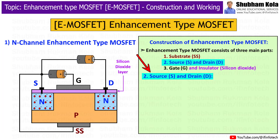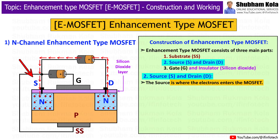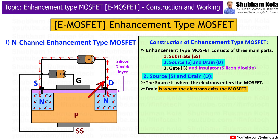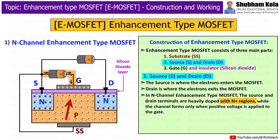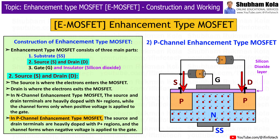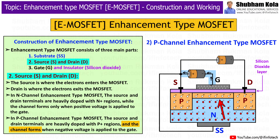Next is the source and drain. The source is where electrons enter the MOSFET, and the drain is where electrons exit the MOSFET. In an N-channel enhancement type MOSFET, the source and drain terminals are heavily doped with N-plus regions, while the channel forms only when a positive voltage is applied to the gate. In a P-channel enhancement type MOSFET, the source and drain terminals are heavily doped with P-plus regions, and the channel forms when a negative voltage is applied to the gate.